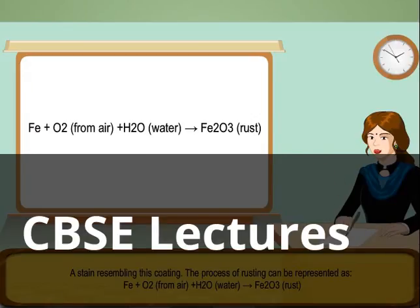The process of rusting can be represented as: Fe + O2 (from air) + H2O (water) forms Fe2O3 (rust).